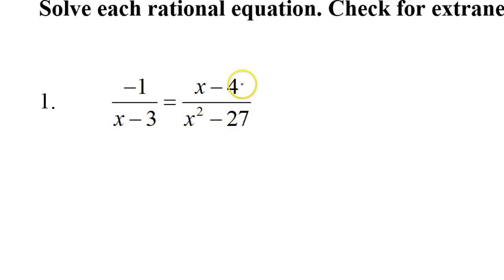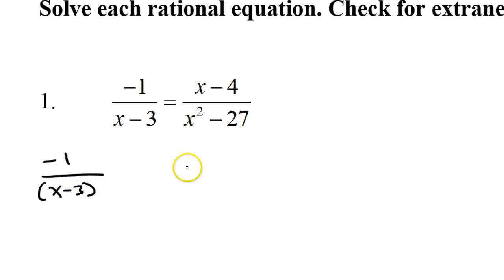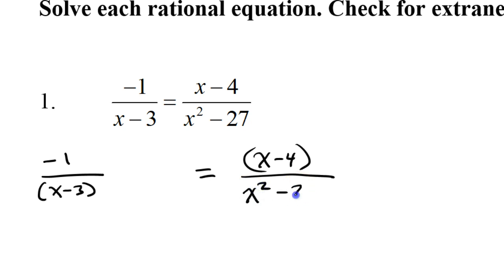I want to have like denominators. I can make that happen by giving each denominator what the other one has. So, I have negative one over x minus three equals x minus four over x squared minus 27. If I could factor this, I would — if this were a 25, I'd be going x plus five, x minus five. But because it's a 27, this is unfactorable.